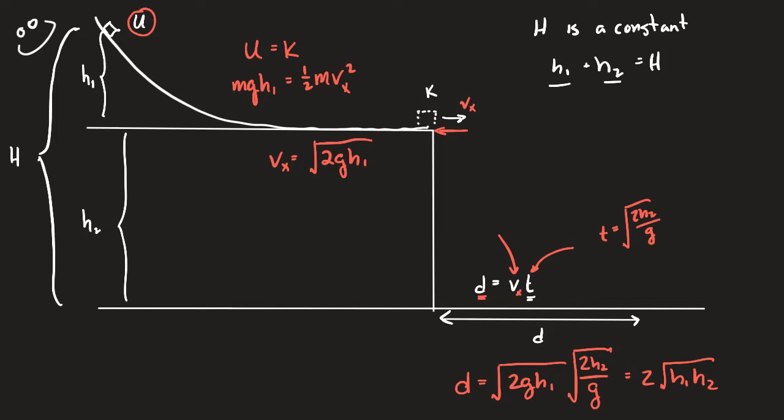The final answer for D is 2 times the square root of H1 times H2. It's an interesting result, and it's worth looking at. I don't think you'll need to do this full derivation on the exam, but I don't think it's terribly out of reach for you either.